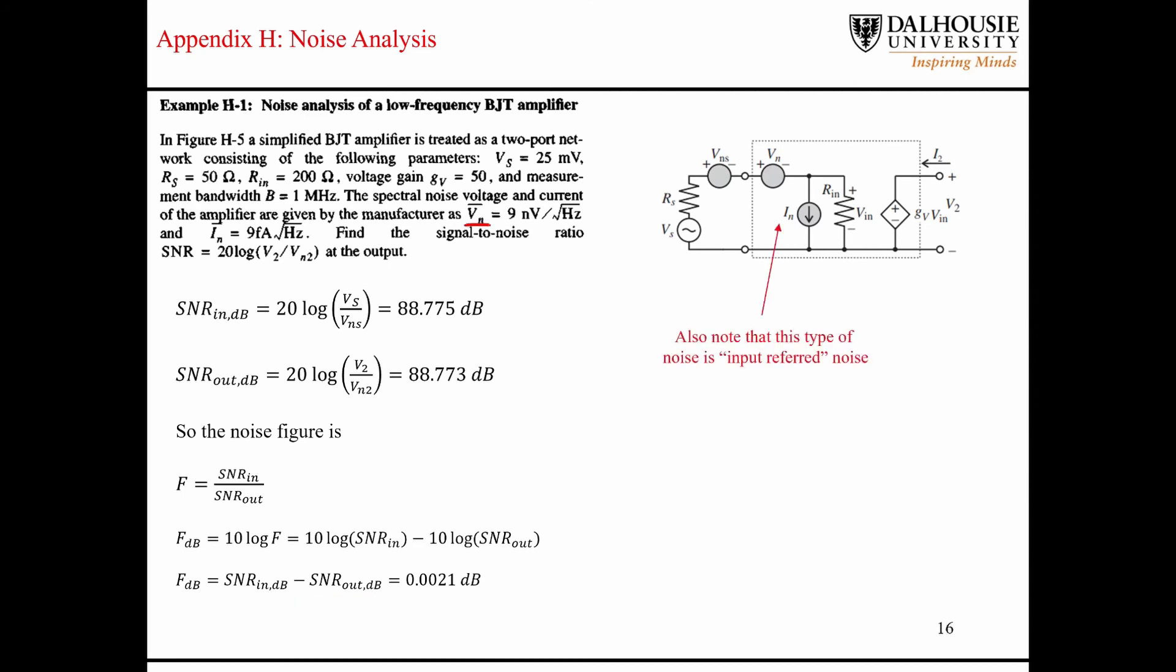So the last thing I want to point out is that these noise sources here were placed at the input side of this BJT. And this is what is known as input-referred noise. So later on, when we talk about multistage amplifiers, we'll see the concept of output-referred noise.